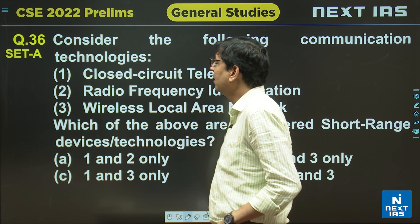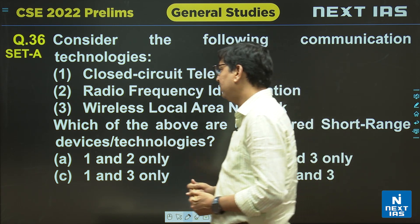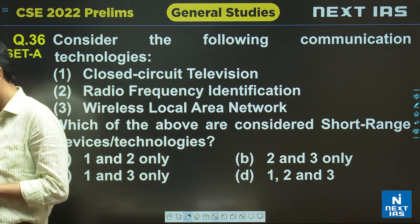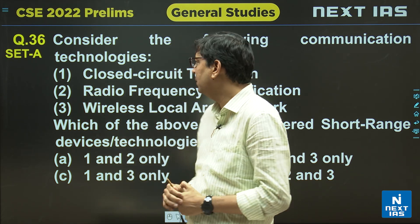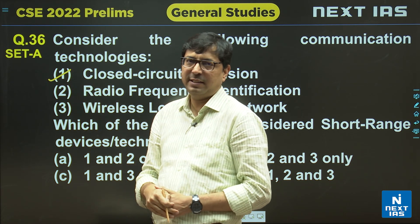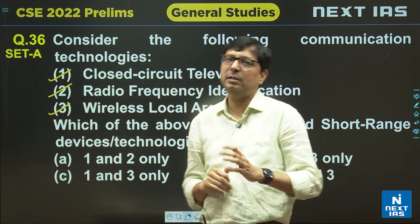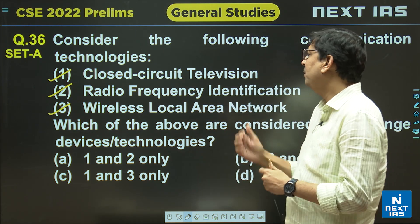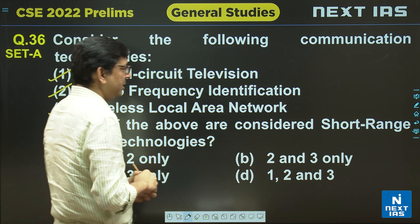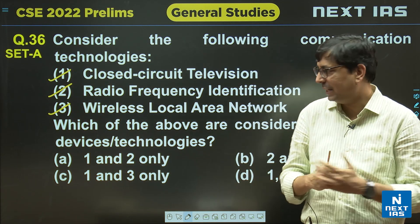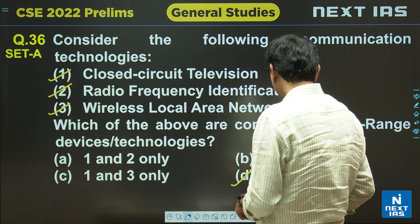Question 36 is about short-range communication technologies. Short-range technology covers a range of a few centimeters up to about 100 meters. CCTV operates in that range, radio frequency operates at a small range, and wireless local area network (WLAN) has a range of 50 to 150 meters, which falls within the short-range category. The answer for question 36 is D.